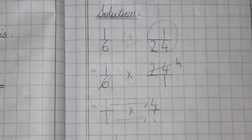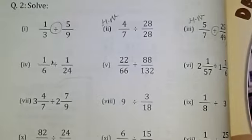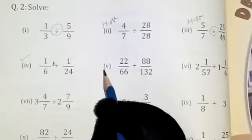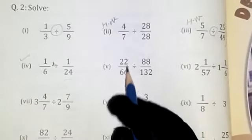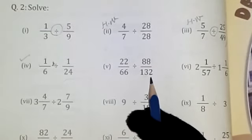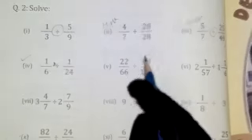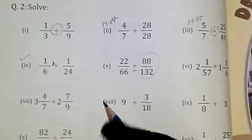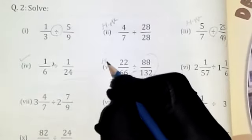Now, come to the book. We have done part number 4. Part number 5. 22 by 66 divided 88 by 132. Same as it is. Reciprocal. You will take it. And divide sign will change to multiplication. This part is your homework.